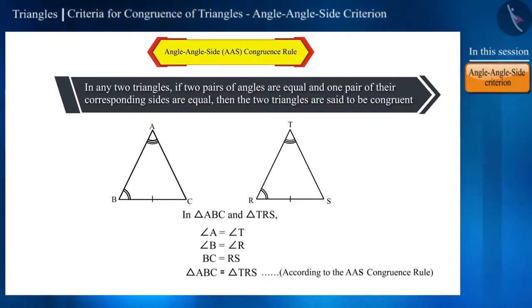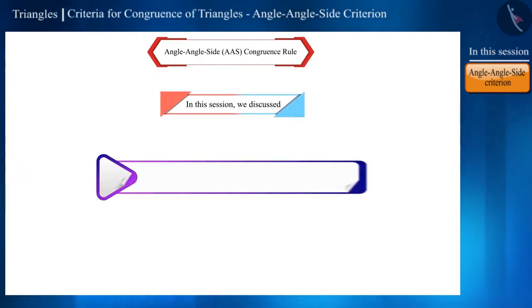We call this the angle-angle-side criterion, that is, the AAS congruence rule. Friends, that's all in this session. Today we discussed the angle-angle-side AAS congruence rule for triangles.